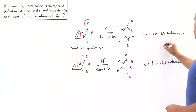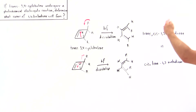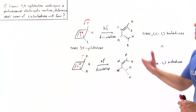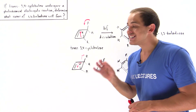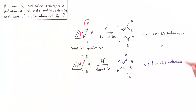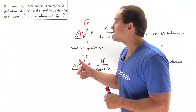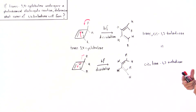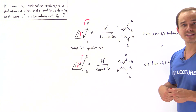These two molecules are equivalent — trans-cis and cis-trans 1,3-butadiene are the same thing. So when trans-3,4-cyclobutene undergoes a photochemical electrocyclic reaction, the only isomer formed is trans-cis (or cis-trans) 1,3-butadiene. By contrast, if we examined a thermal electrocyclic reaction, we would instead produce trans-trans or cis-cis 1,3-butadiene.